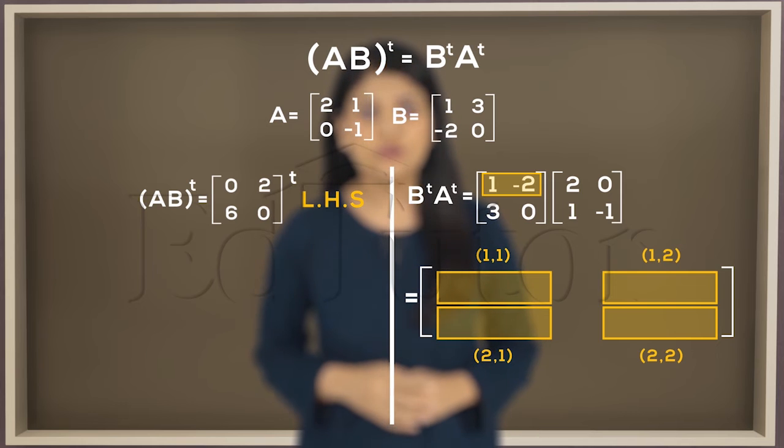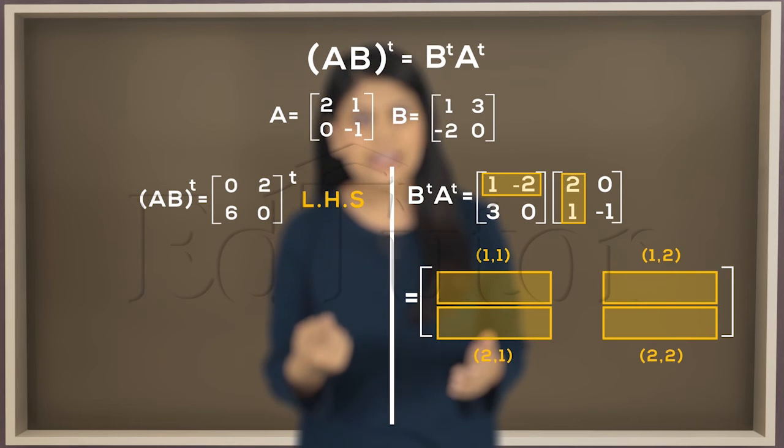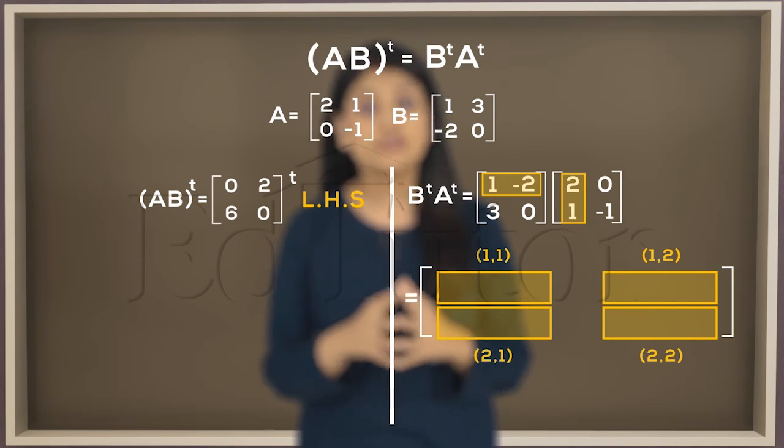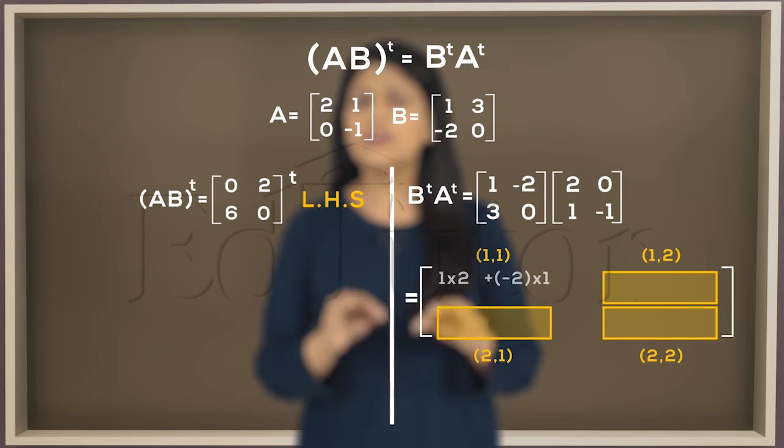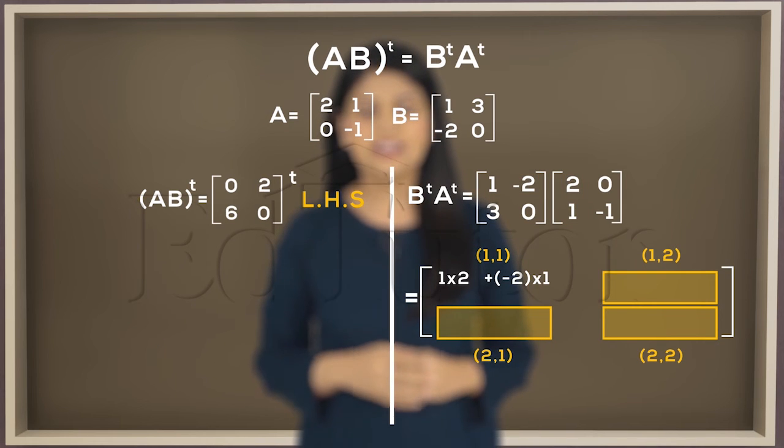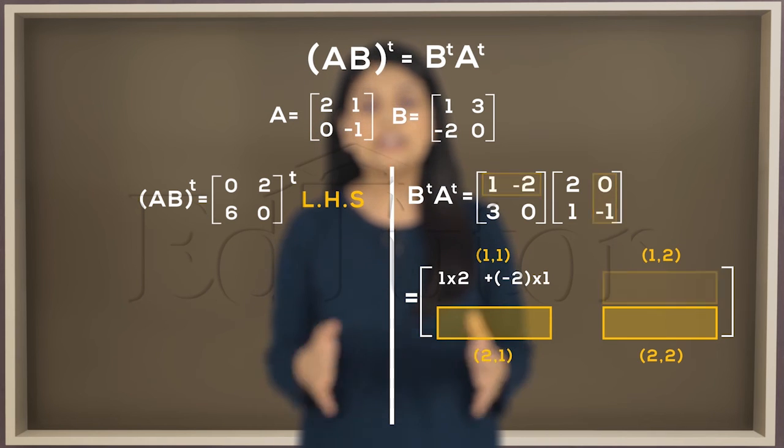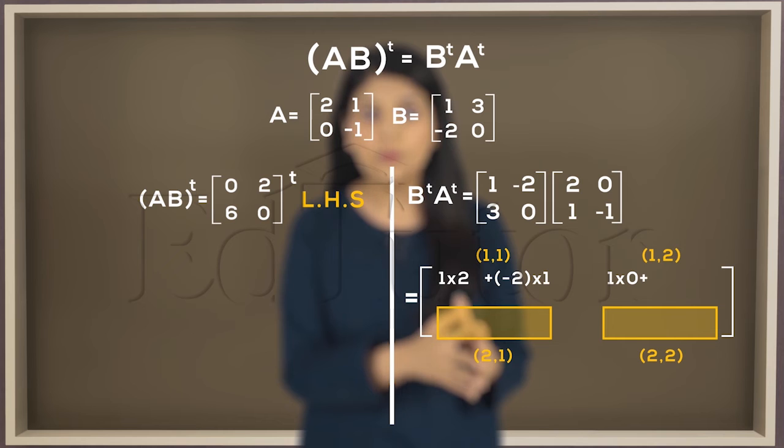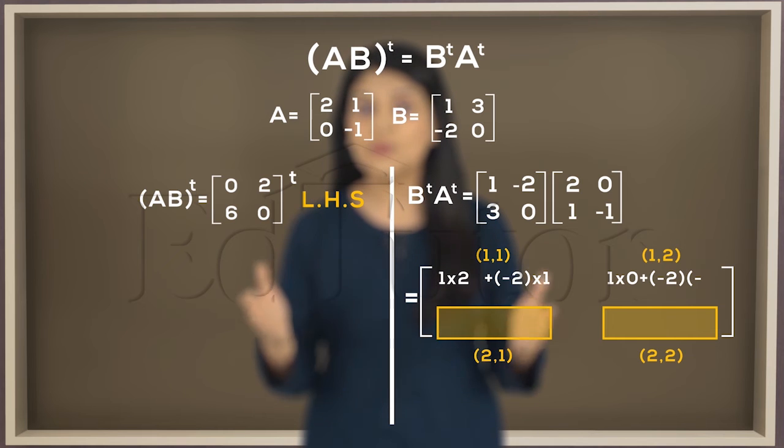So when I take the first row of the transpose of B and multiply it by the first column of the transpose of A, the result will come here at the 1 1 position. Then for the multiplication of first row with the second column, we get 1 into 0 plus negative 2 into negative 1.